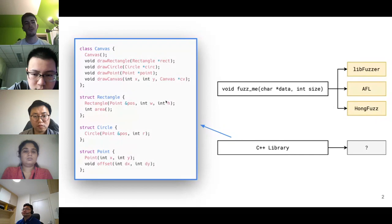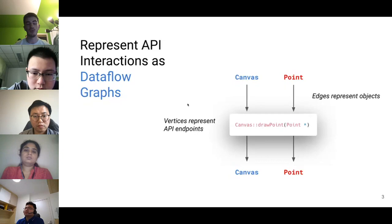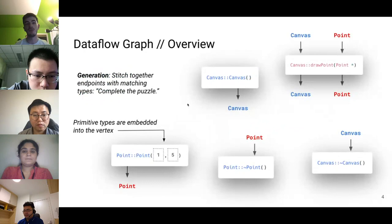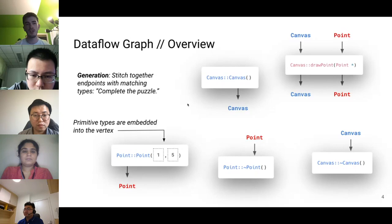With GraphFuzz, the main idea is to represent API interactions as data flow graphs. In the graph, vertices represent API endpoints (in this case, functions), and edges represent objects that are produced by some endpoints and consumed by others. For example, here we have a method on a canvas object: as input, we need a canvas object and a point object; after invoking this function, we're free to do other things with a canvas endpoint. You can imagine converting your whole API surface to a set of endpoints with expected inputs and outputs — a canvas constructor that produces a canvas object, and a canvas destructor that consumes a canvas object. With this representation, the problem of generating a new test case becomes: how can we link a bunch of these endpoints together such that all the edges are connected and types match?